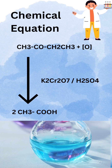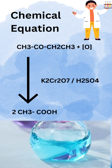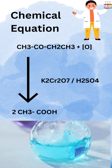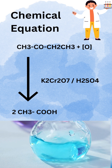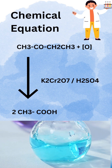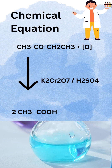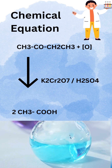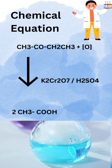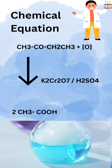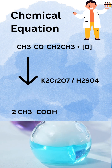CH₃COCH₂CH₃ plus nascent oxygen, in the presence of K₂Cr₂O₇ and H₂SO₄, produces two molecules of CH₃COOH, known as acetic acid.